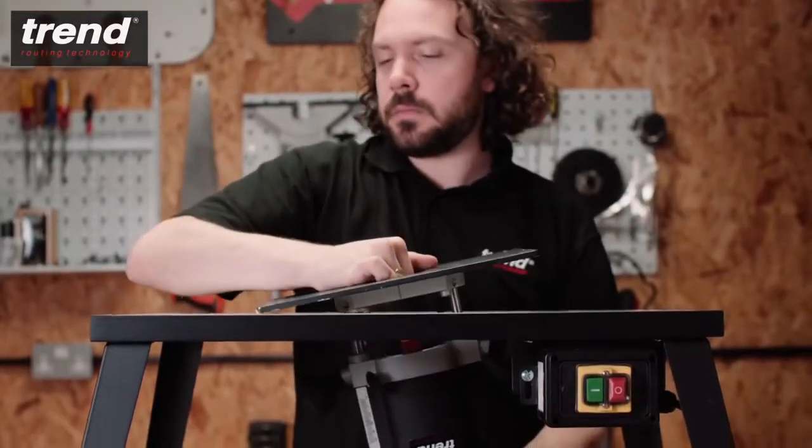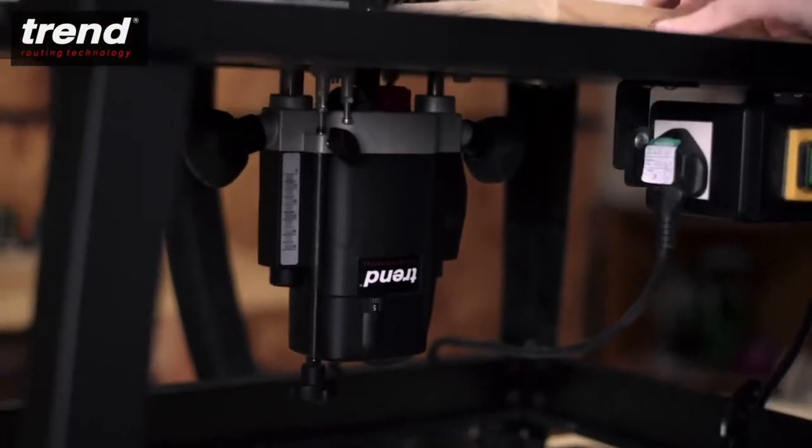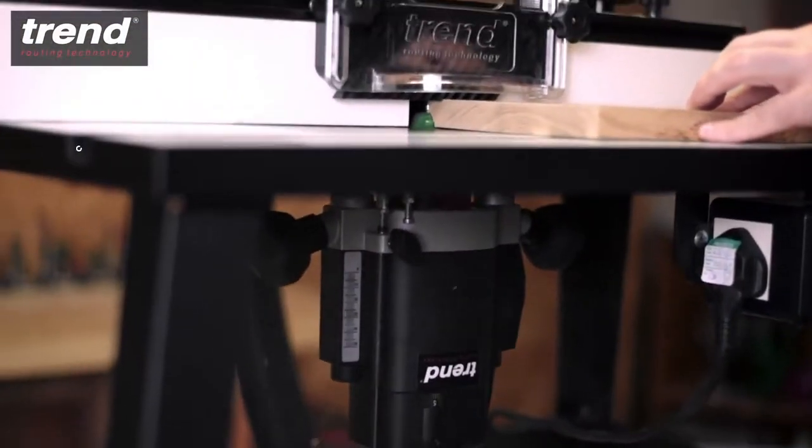There are two threaded holes in the base which allow other accessories to be fitted or for mounting in a router table.